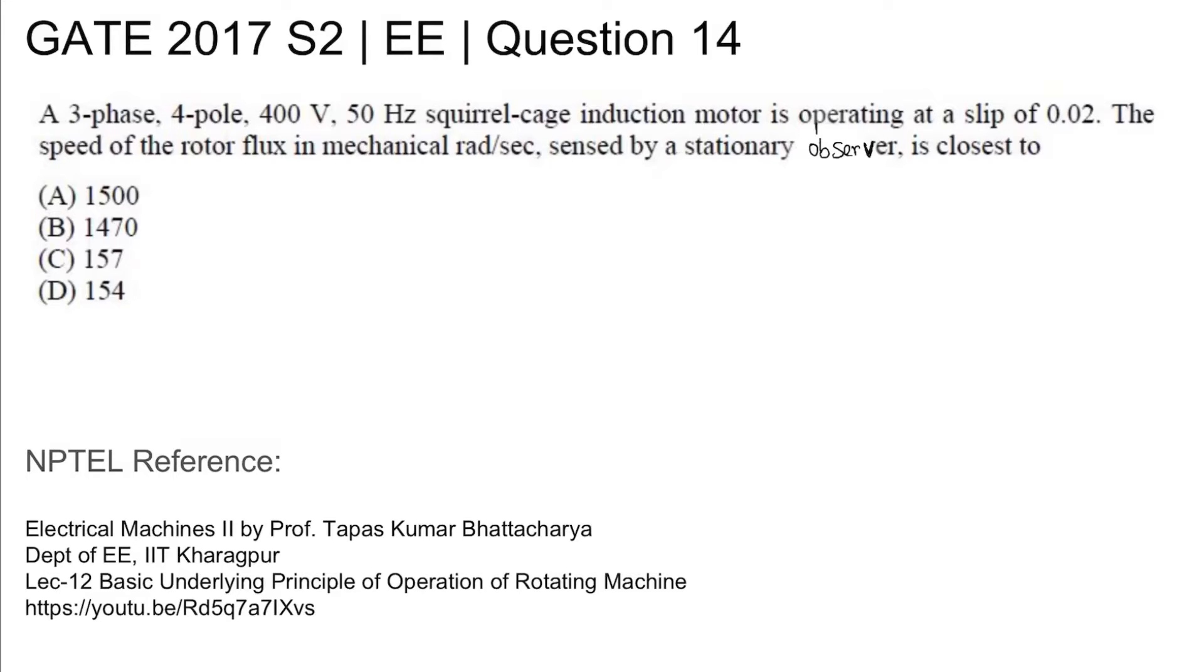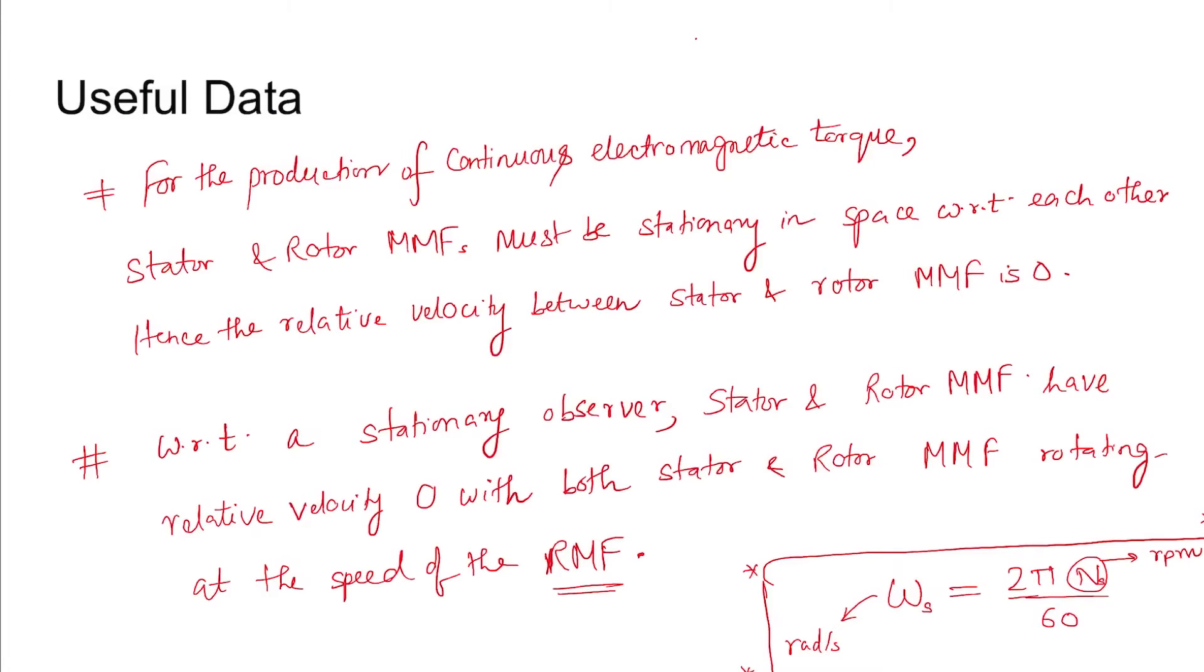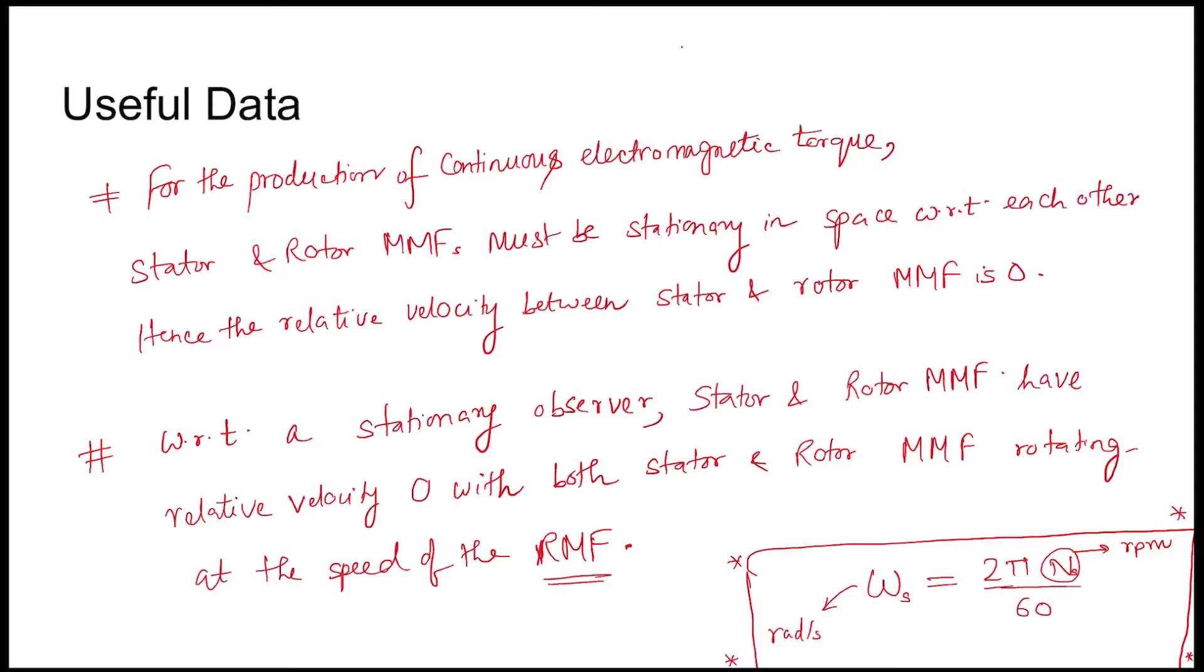The basic principle for operation of rotational machines and production of continuous electromagnetic torque is that the relative speed between the stator and rotor MMF must be zero. That is, they must be stationary in space with respect to each other, such that the relative velocity between the stator and rotor MMF is zero.